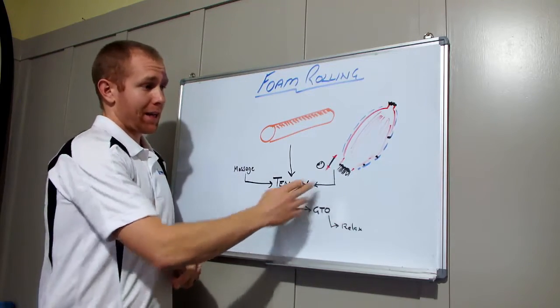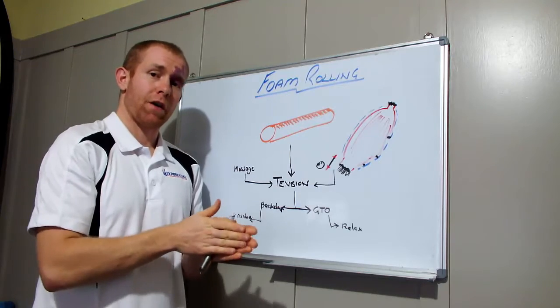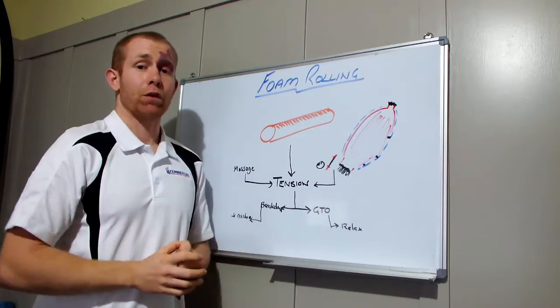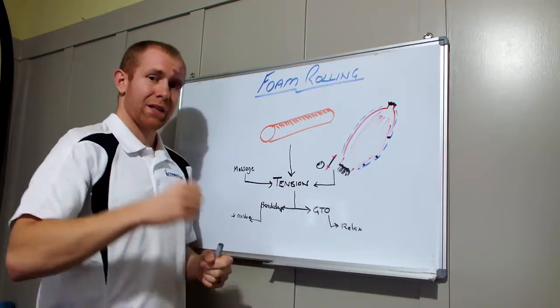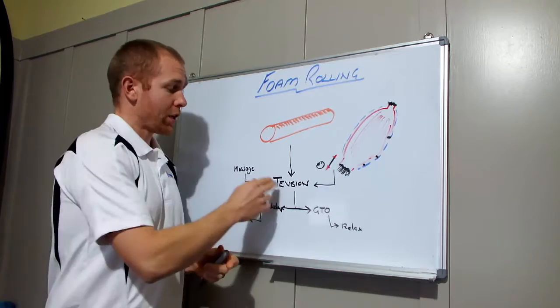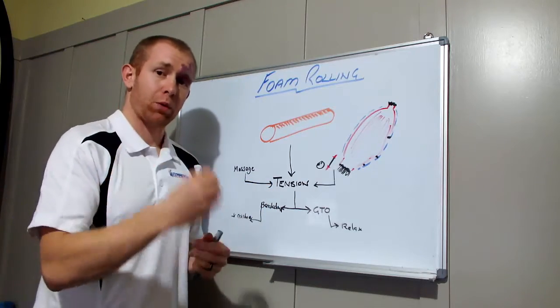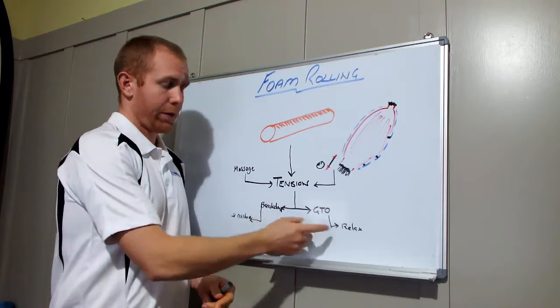From the breakdown of these adhesions, we decrease that sliding resistance of the myofascial layer again improving our mobility. Both of these things require this tension to be developed. If we don't develop this tension or have that pressure or that load, then it's not going to do anything through these two pathways.